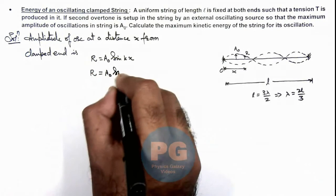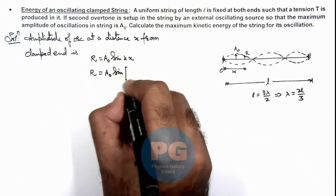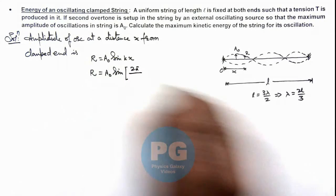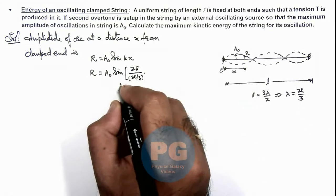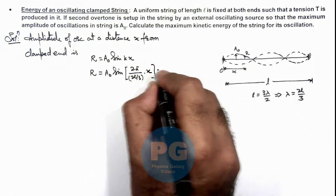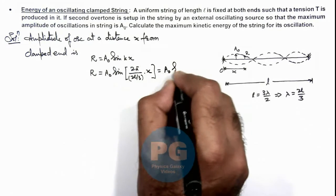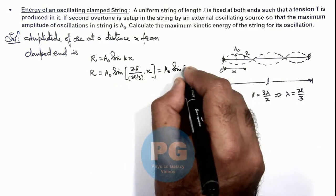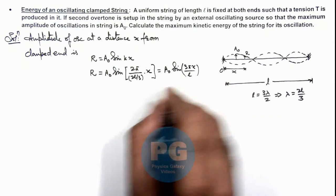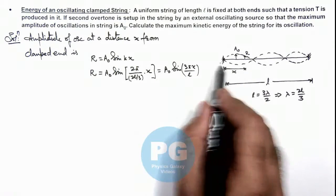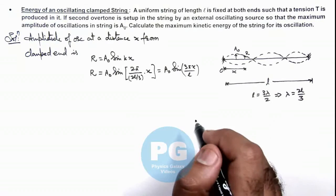k we can write as 2π/λ which is 2l/3 multiplied by x. So we are getting this value of R as A₀ sin(3πx/l). So this relation gives us the amplitude as a function of x for all the particles in the medium.